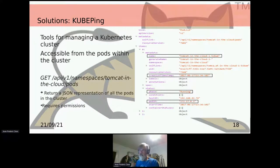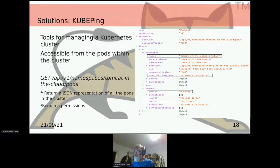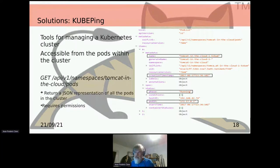This is the KubePing way of doing things. In a pod, you can access Kubernetes information. You make a GET request to the Kubernetes API asking for all the pods in the Tomcat cloud namespace. Kubernetes replies with a large piece of information, and we're interested in the name filter — the name of the pod — filtering for ones that are running, and we get the pod IP. The pod IP is accessible within the namespace, so one Tomcat running there can access the other Tomcat based on this.